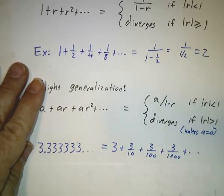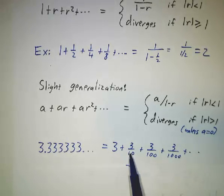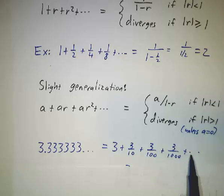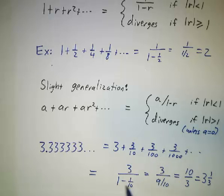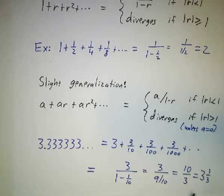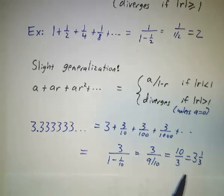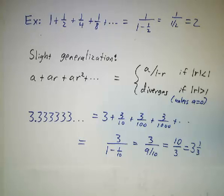So what does an expression like 3.3333 repeating mean? It means 3 plus 3 tenths plus 3 hundredths plus 3 thousandths and so on. Here a is 3, and each term is 1 tenth of the previous term, so r is 1/10. We get 3 divided by 9/10, which is 10/3, which is 3 and a third. We expect 0.3333 repeating to mean one third, and this is why — no matter how far out you go you don't get exactly a third, but in the limit you get a third.